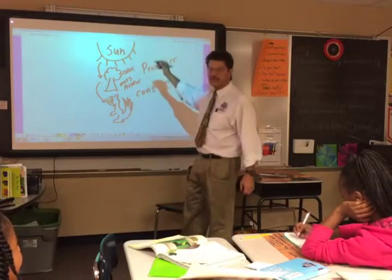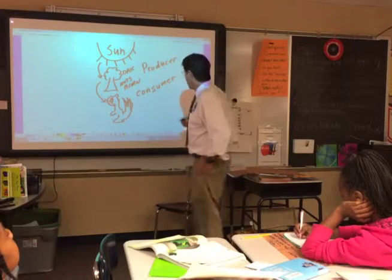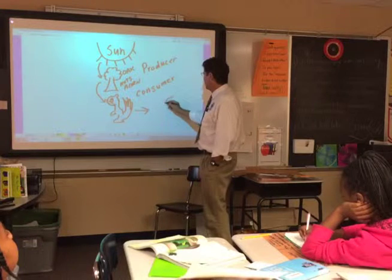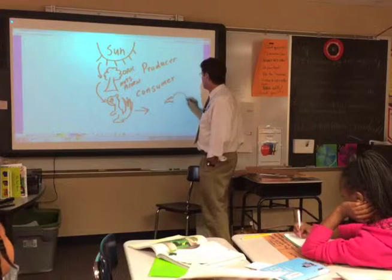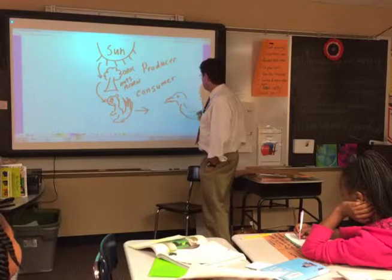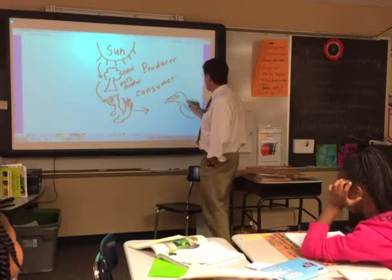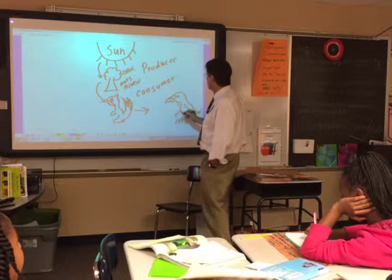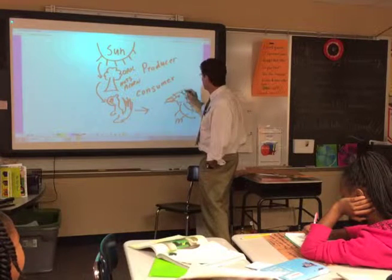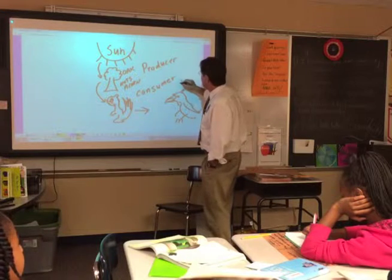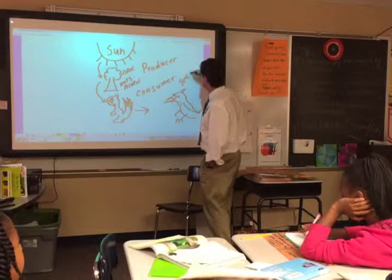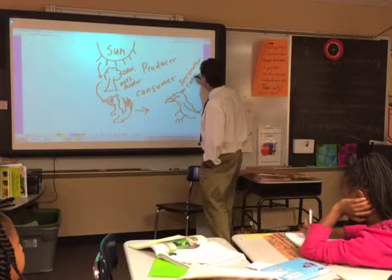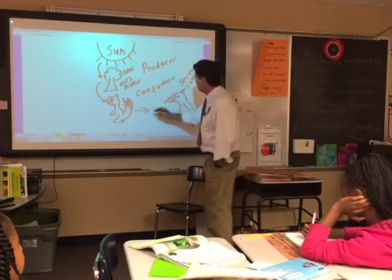So the energy goes from the sun to the producer to the consumer. Along comes a bird of prey — a hawk, since we're in Indiana — with its sharp talons. That hawk is a secondary consumer, and the energy goes there.